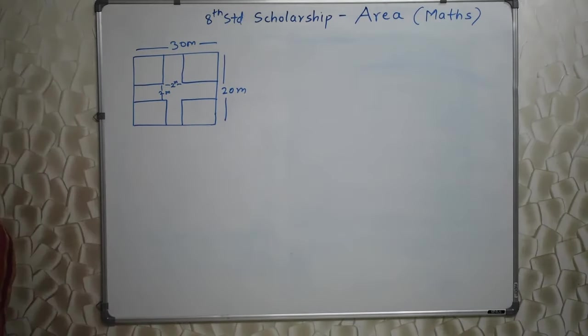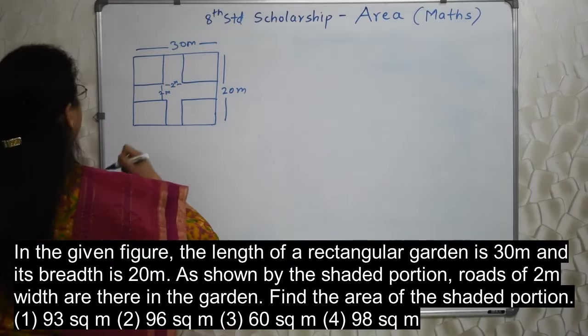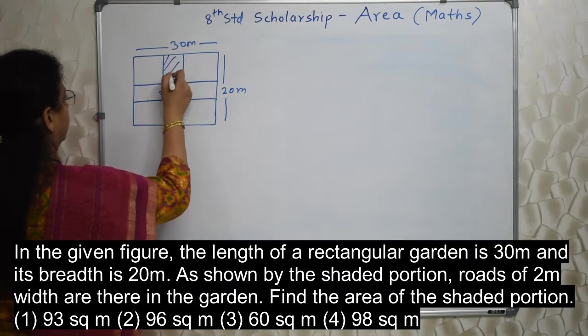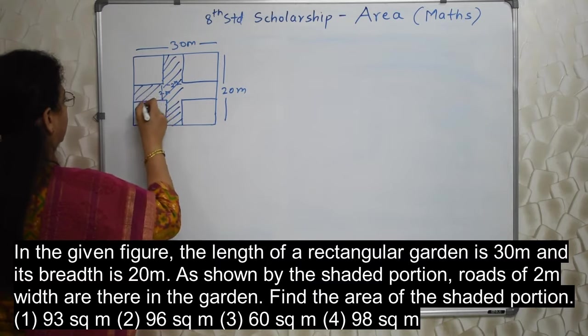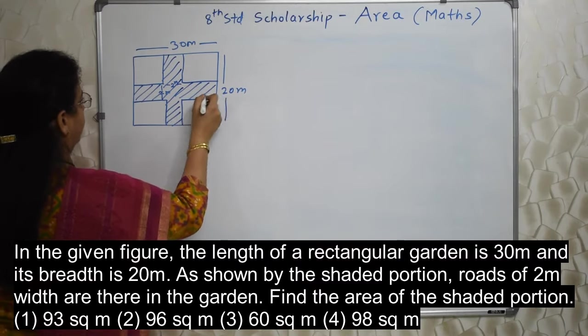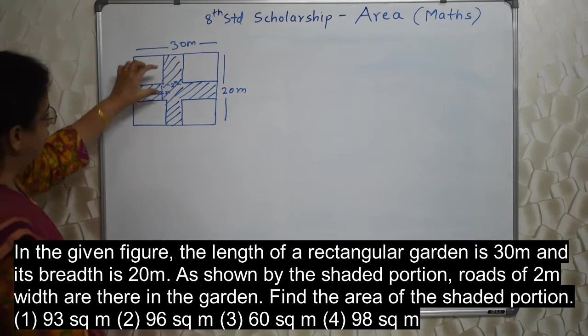The first sum will appear on your screen. In the given figure, the length of a rectangular garden is 30 meters and its breadth is 20 meters. As shown by the shaded portion, roads of 2 meters width are there in the garden. This is 2 meter, this is also 2 meter.